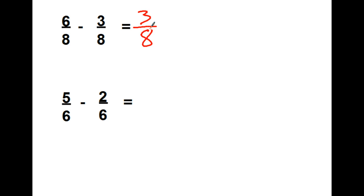5, 6 minus 2, 6. 5 minus 2 is 3. Denominator doesn't change, it's 3, 6. They're not both even, but I can divide them both by 3. And 3, 6 is really 1 half.